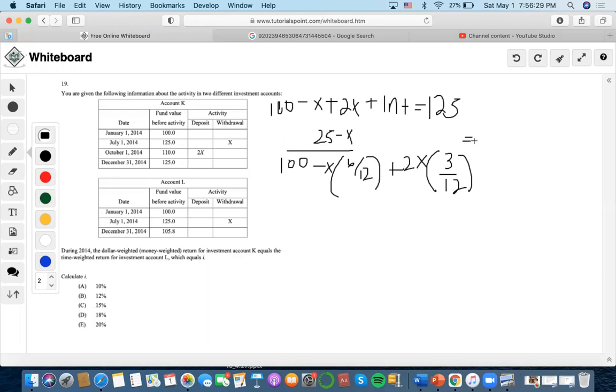And now we can solve. So we multiply 2, 3, 6, 12. So we notice that these cancel out. So the dollar-weighted return is this value. Now let's do time-weighted.